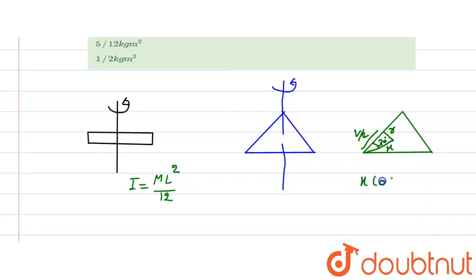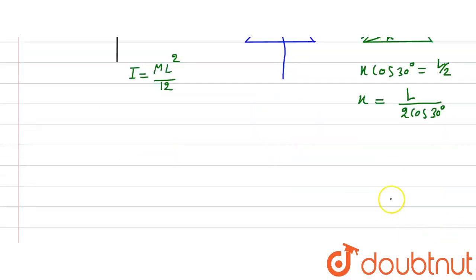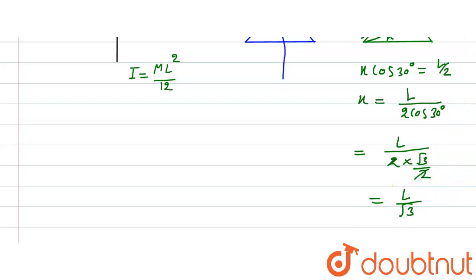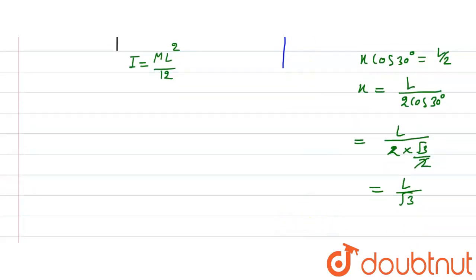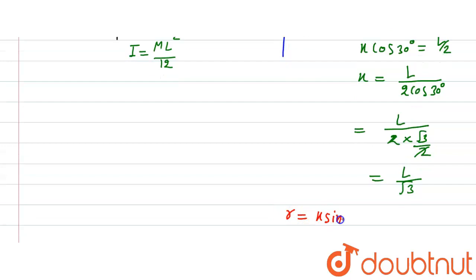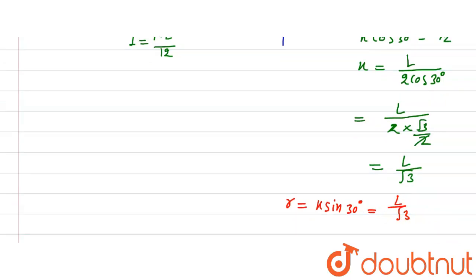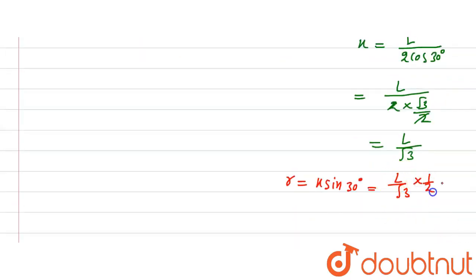We write: x · cos30° = l/2, so x = l/(2·cos30°) = l/(2 · √3/2) = l/√3. Then r = x · sin30° = (l/√3) · (1/2) = l/(2√3).